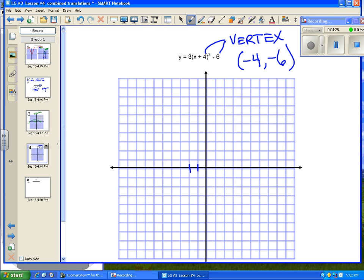So minus 4, 1, 2, 3, 4, and minus 6, 1, 2, 3, 4, 5, 6. It's going to be way down here. But look at this. Our parabola is going to be opening upwards, and being that that's a 3 it's going to be narrow, so it's going to look something like that.